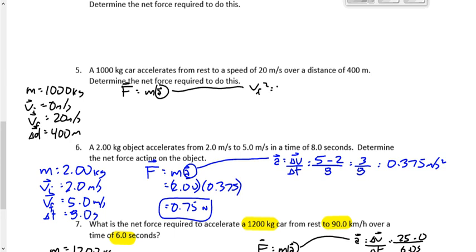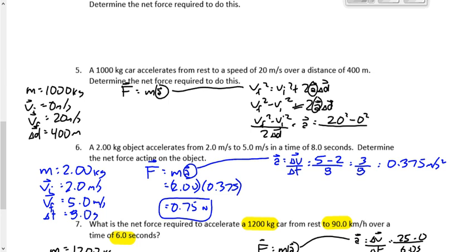Let's try VF squared is equal to VI squared plus 2AD. So we're going to say, we're solving for A here. VF squared minus VI squared equals 2AD. And then we're going to take the 2 and the D over by division. So we end up getting VF squared minus VI squared over 2 times D equals A. VF is 20 squared minus 0 squared over 2 times 400. That's 20 squared is 400 divided by 800 is 0.500 meters per second squared.